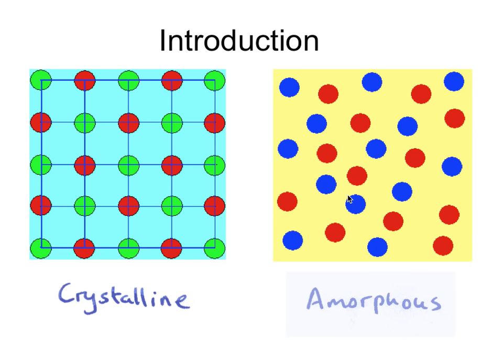Typical examples of crystals include quartz or iron, and of an amorphous material would be window glass or metallic glass, which is produced by cooling a liquid at a sufficiently fast rate so that the atoms do not have a chance to order. To summarize: crystalline materials have long-range order and are likely to be anisotropic, meaning their properties vary with the direction along which measurements are made.